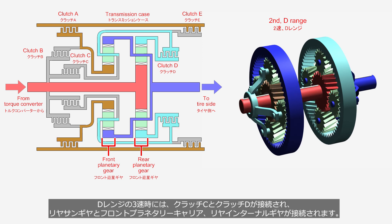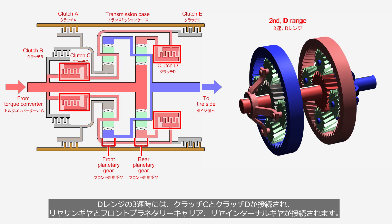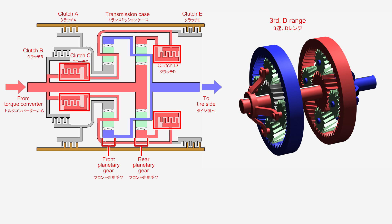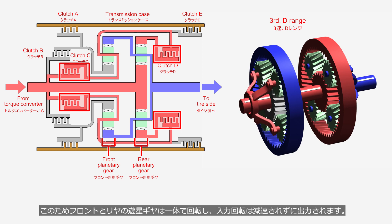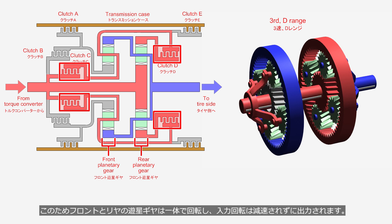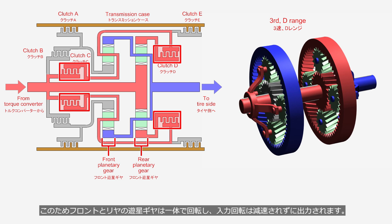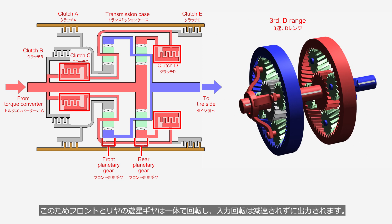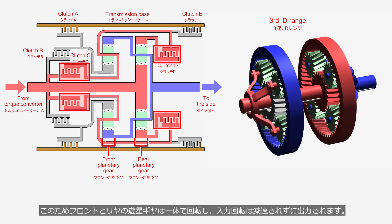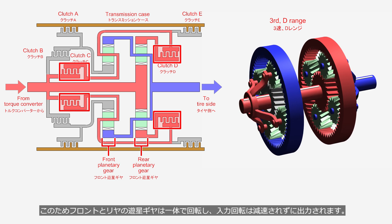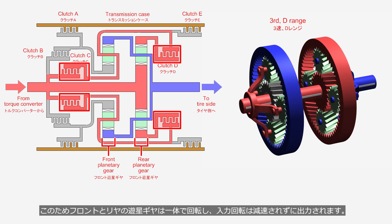In the third gear of the D range, clutch C and clutch D are engaged, connecting the rear sun gear, the front planetary carrier, and the rear internal gear. As a result, the front and rear planetary gears rotate as a unit, and the input rotation is transferred to the output without reduction.